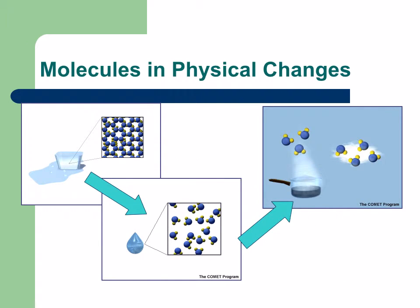The molecules in physical changes — here it shows you the three states of matter, which you'll learn about in module four, coming up. All the molecules are doing as we take matter from cold to hot to hotter is speeding up and spacing out, but the molecules themselves did not change.